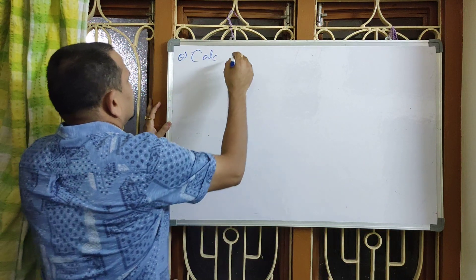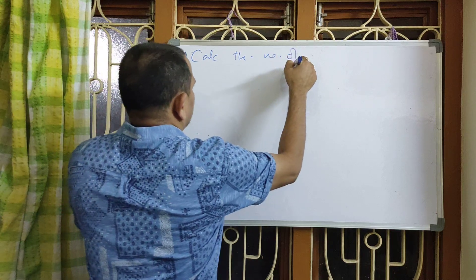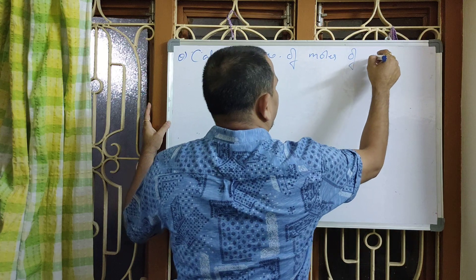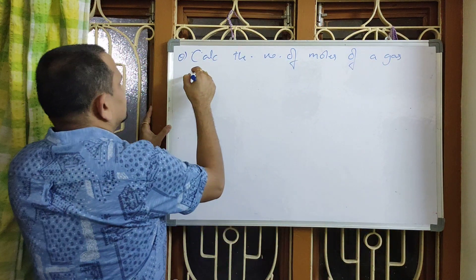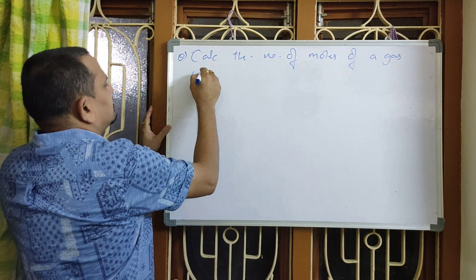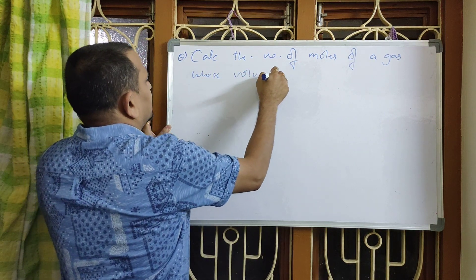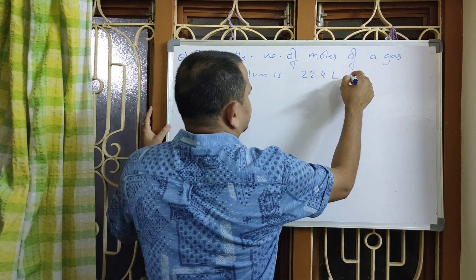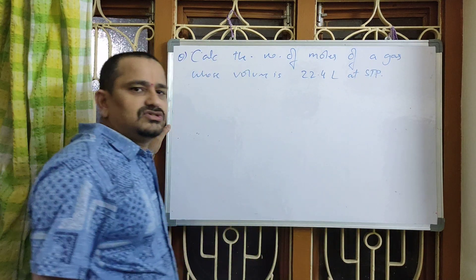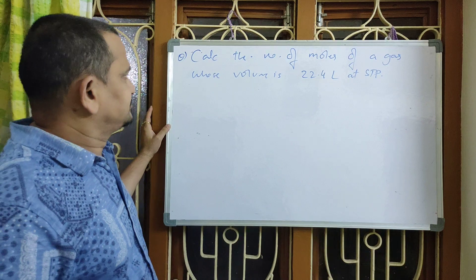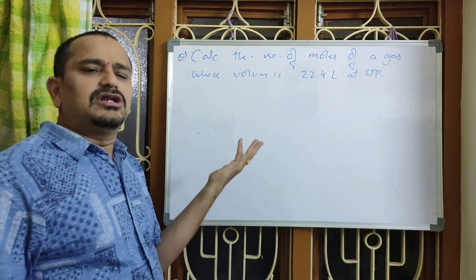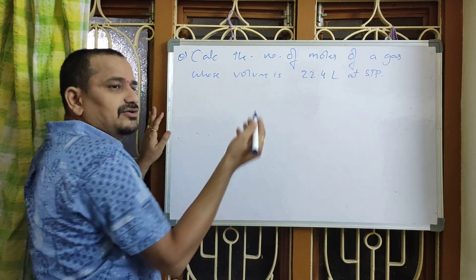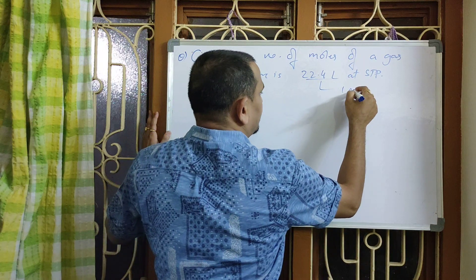Calculate the number of moles of a gaseous substance whose volume is 22.4 liters at STP. Just now we studied: molar volume is the volume occupied by 1 mole of any gas at STP. According to that condition, 22.4 liters at STP is occupied by 1 mole.